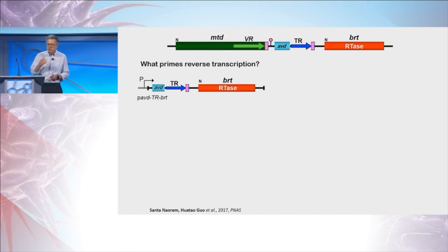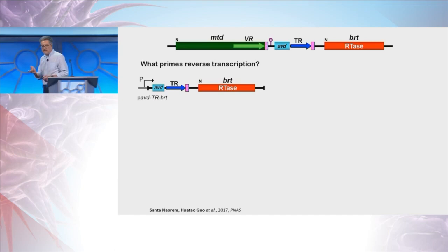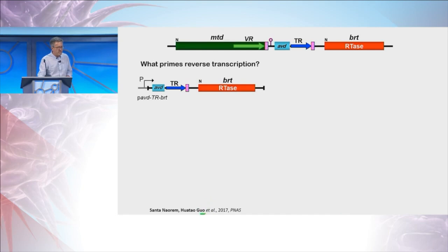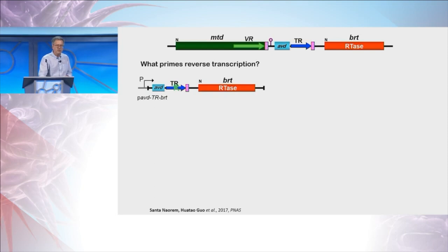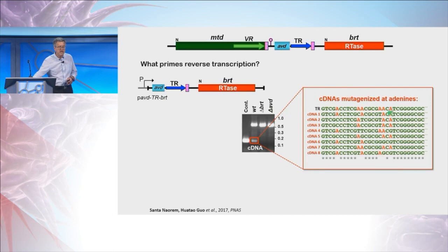Regarding the mechanism: one key question when you see a new retroelement is what primes reverse transcription. This experiment was done by Wautao Gao, a postdoc in the lab, finished up by Santa Norum in Wautao Gao's lab at the University of Missouri. The question was: what happens if you express in trans the diversifying machinery? This includes an open reading frame coding a small protein called AVD, which is essential for this process. When expressed at fairly high levels in Bordetella, cDNA was produced — which we didn't expect — and it was dependent on the reverse transcriptase and the accessory variability determinant, and the cDNAs were themselves mutagenized at adenines.